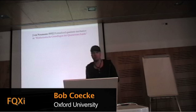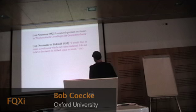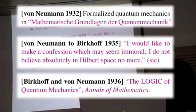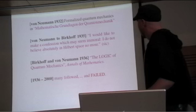In 1932, von Neumann formalized quantum mechanics in his Mathematische Grundlagen der Quantenmechanik. About three years later, he wrote to his friend Gary Birkhoff: 'I would like to make a confession which may seem immoral. I do not absolutely believe in Hilbert space no more.' One year later, they produced a paper called The Logic of Quantum Mechanics, and they had many followers, and all of them failed.